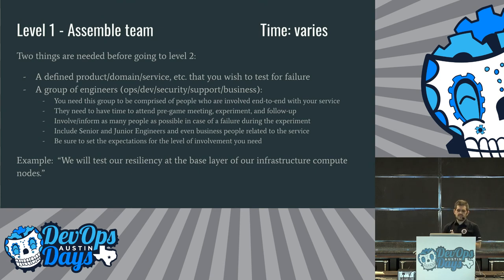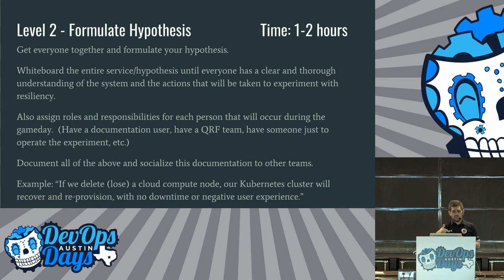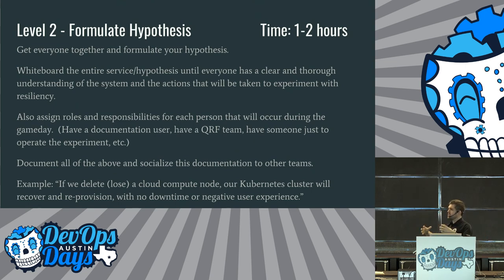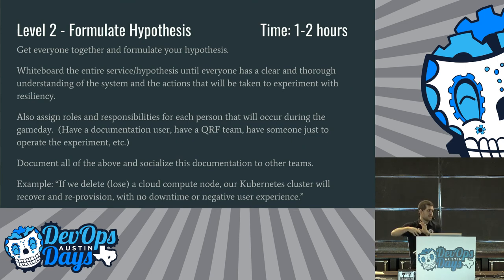Here's an example: we will test our resiliency at the base layer of our infrastructure compute nodes. At level one you should have a hypothesis and a team. Moving into that hypothesis, get everybody together and formulate it — maybe test your Kubernetes nodes, or VM creation or an AMI spinning up in AWS. Whiteboard that entire hypothesis until everyone in your working group has a clear understanding of how it works. Don't have herd immunity where junior engineers don't get it — make sure they're with you, because this is a way to level up your team.